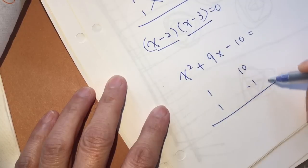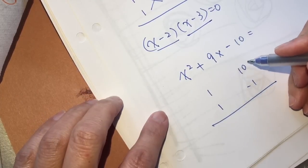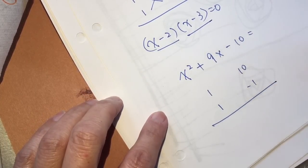So these two makes positive nine. These two adding together make positive nine, times together make negative ten.